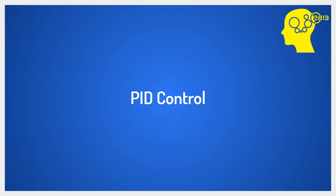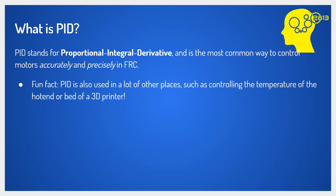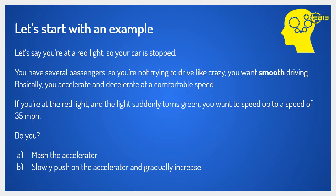Let's talk about what PID is, because they're seen everywhere. PID is an acronym that stands for proportional, integral, derivative, and each one stands for a specific constant that you modify within the PID controller. It's the most common way to control motors accurately and precisely in FRC. As a fun fact, they're used in a lot of other places too — for example, if you own a 3D printer, the bed temperature and hot end temperature are actually controlled by a PID controller.